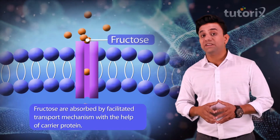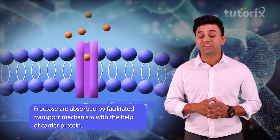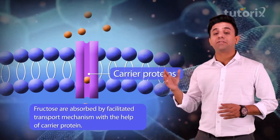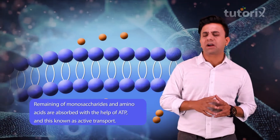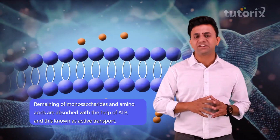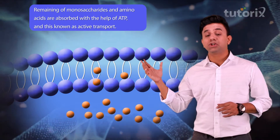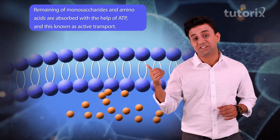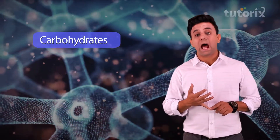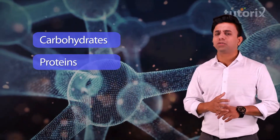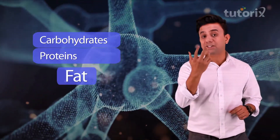Some other monosaccharides like fructose are absorbed by means of facilitated transport mechanism, that is with the help of carrier proteins. The remaining monosaccharides and the amino acids are absorbed with the help of ATP — that is the required energy — and this is the active transport mechanism.